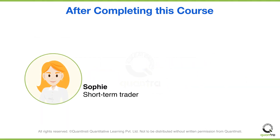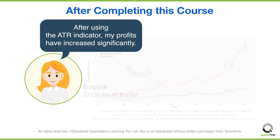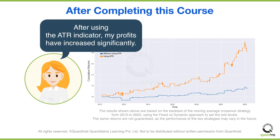Remember Sophie — if you too do not like the turbulent swings in prices during volatile times, you would really benefit by implementing the ATR indicator. The ATR indicator can help you set stop-loss and take-profit levels dynamically, based on the volatility, and this will surely help you in increasing your profits.